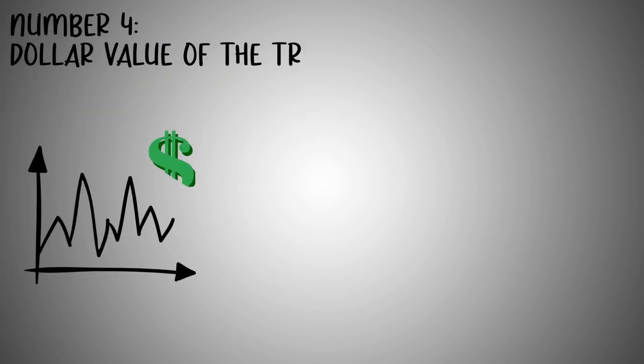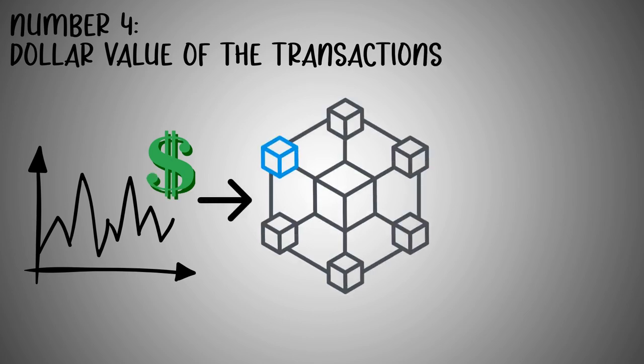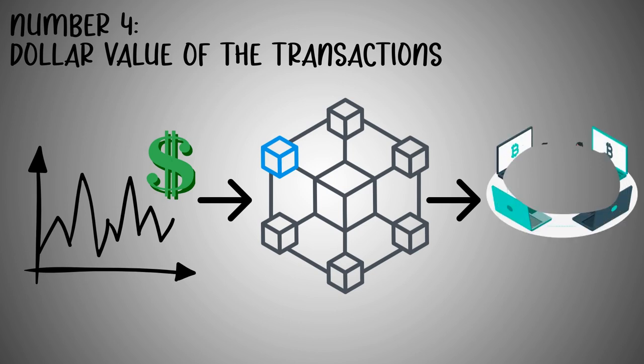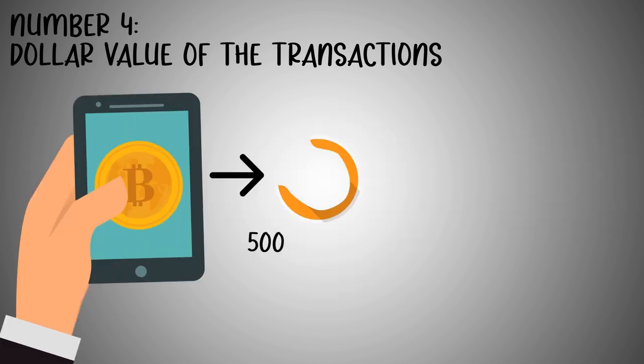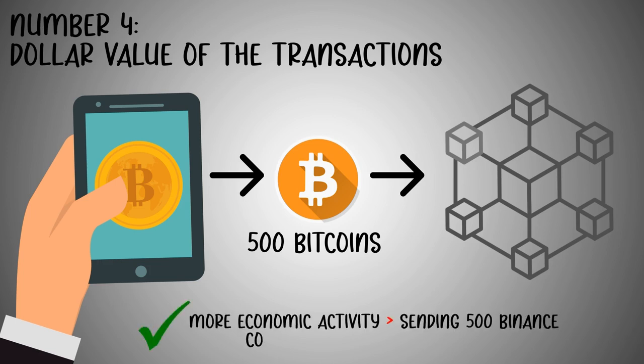Number four: the dollar value of transactions. Higher economic activity on a blockchain is quantified by the number of real human transactions carried out across different blockchain networks. For instance, sending 500 Bitcoins to multiple blockchain addresses reflects more economic activity than sending 500 Binance Coins across the same network, due to the dollar value of Bitcoin being higher than that of Binance Coin.